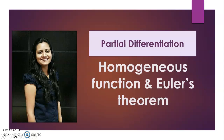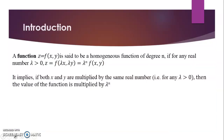Under this we will discuss specifically about homogeneous functions and Euler's theorem. A function z equals f(x, y) is said to be a homogeneous function of degree n if, for any real number lambda greater than 0, when we multiply both variables with lambda, the value of the function is multiplied with lambda raised to power n. When this happens, we say the function is a homogeneous function with degree n.